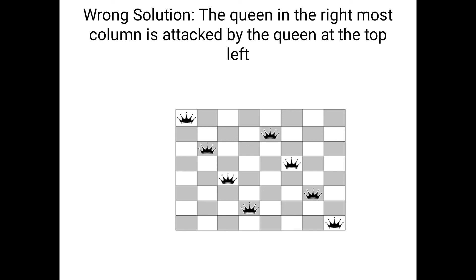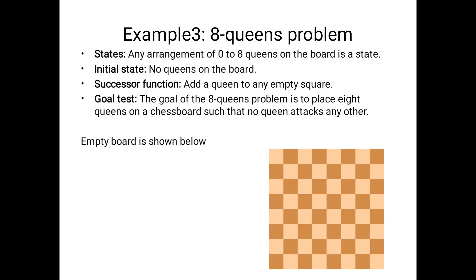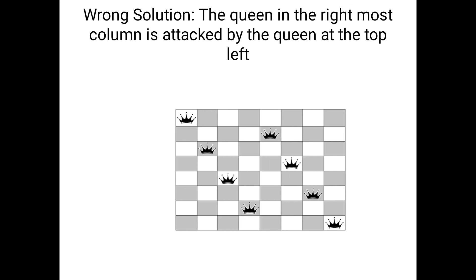Now we see a wrong solution. Please observe this eight-by-eight board. The condition is that no queen attacks any other. In this wrong solution, the queen in the rightmost column is attacked by the queen at the top-left along the diagonal. The first queen and the eighth queen attack each other diagonally, which violates the constraint. That is why this is the wrong solution.